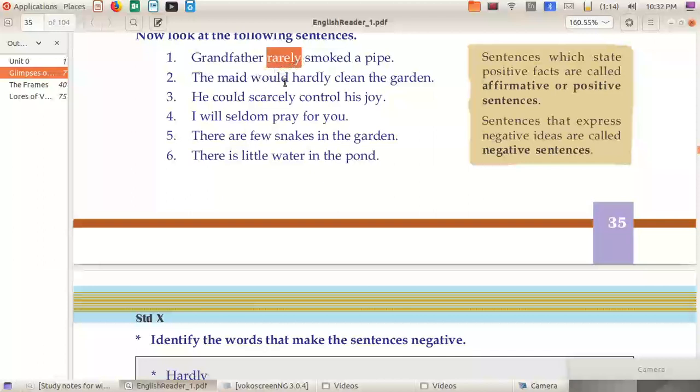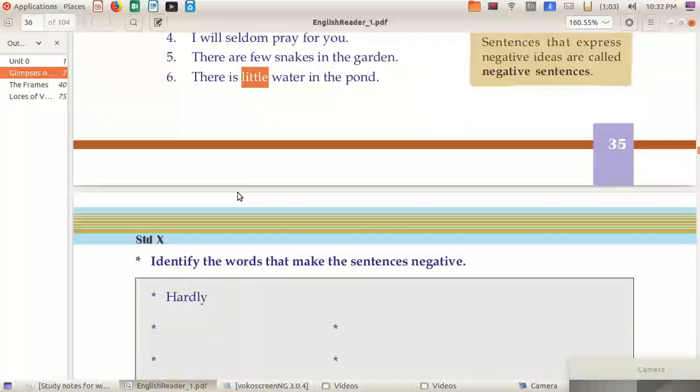The maid would hardly clean the garden - hardly is a word showing the negative idea. He could scarcely control his joy - scarcely. In the next sentence, seldom is used. In the fifth one, few. Few is a negative showing word. There is little water - little is also a negative showing word.